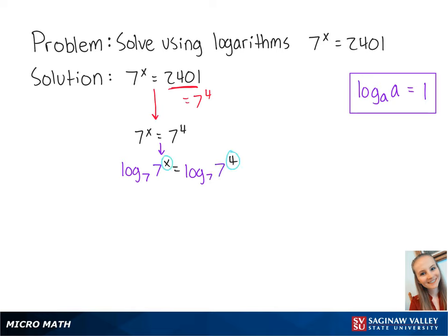To bring down the exponents, we're going to use this next property to get us x times log base 7 of 7 equals 4 times log base 7 of 7. Since log base 7 of 7 is equal to 1,